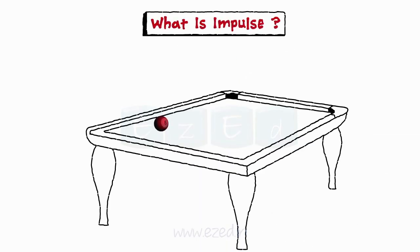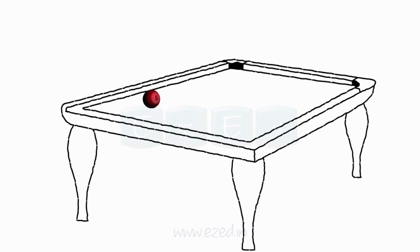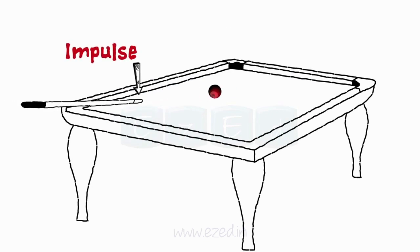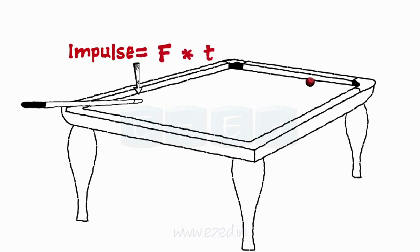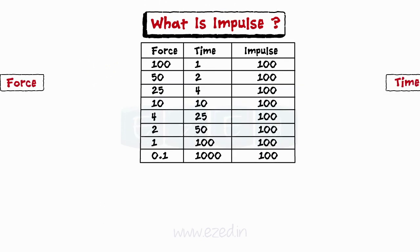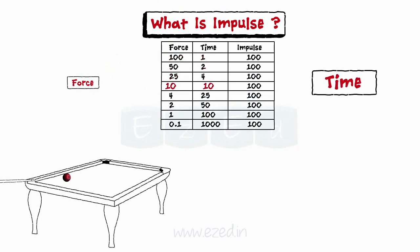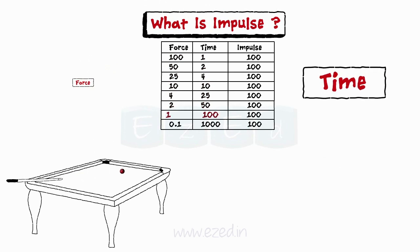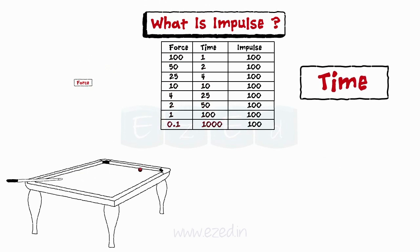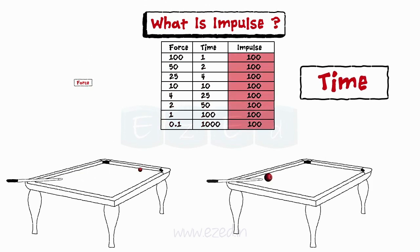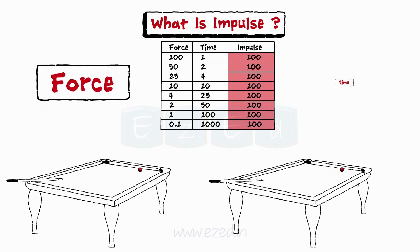Consider a ball acted upon by a force for a period of time. This force is said to have an impulse on the ball, and the magnitude of this impulse is the product of the force and the duration for which it acts. From this table, we can observe that the greater the time over which the collision occurs, the smaller the force acting upon the object. To maximize the force on an object, time must be decreased.